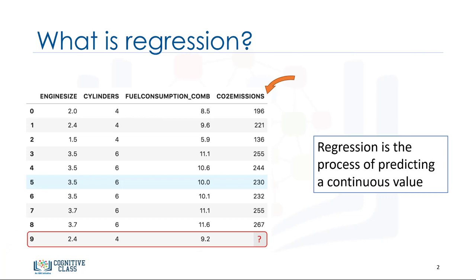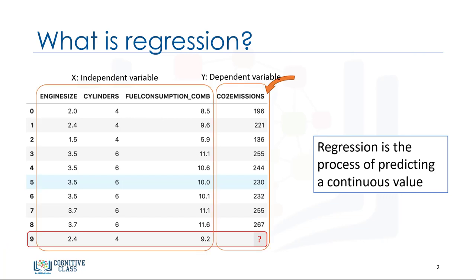In regression, there are two types of variables: a dependent variable and one or more independent variables. The dependent variable can be seen as the state, target, or final goal we study and try to predict, and the independent variables, also known as explanatory variables, can be seen as the causes of those states. The independent variables are shown conventionally by x, and the dependent variable is notated by y.